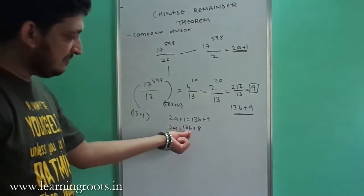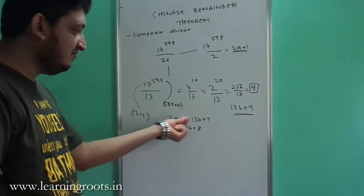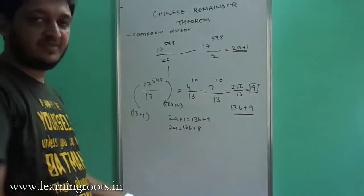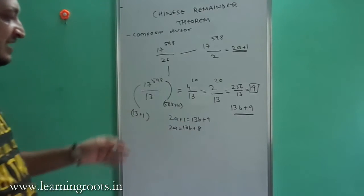What people tend to do is they will tend to put 1 here and then they will try to figure out what the value of B will be.